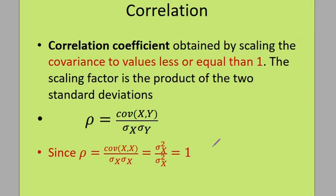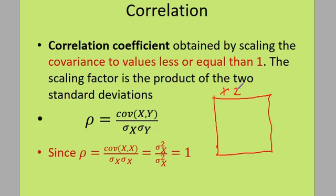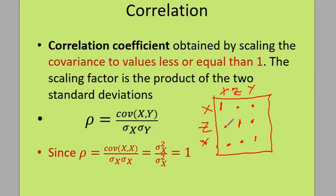Sometimes when you perform correlation in your software, you will see a matrix. If this is variable X, variable Z, and variable Y, then where X and X are paired, the correlation will always be one. Where Z and Z are paired, this is always one. Where Y and Y are paired, the correlation is one. The off-diagonal entries show the relationships — for example, Y and X, or Y and Z. Symmetric entries should be equal to each other.